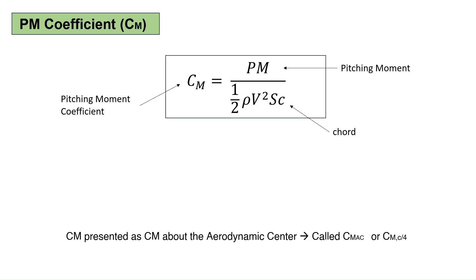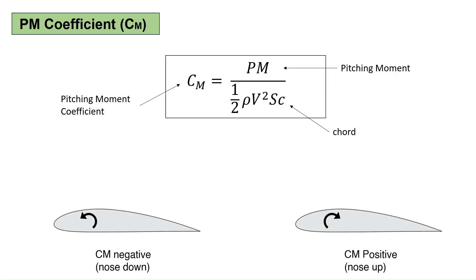As we saw earlier, the pitching moment about the aerodynamic center does not change with angle of attack, which is why the pitching moment coefficient of an airfoil is presented in the form of CM about the aerodynamic center or about the quarter cord. If CM is positive, the moment is nose up and if it is negative, the moment is nose down. Most airfoils have negative pitching moment about the aerodynamic center.